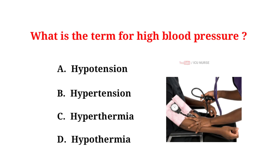What is the term for high blood pressure? A. Hypotension. B. Hypertension. C. Hyperthermia. D. Hypothermia.